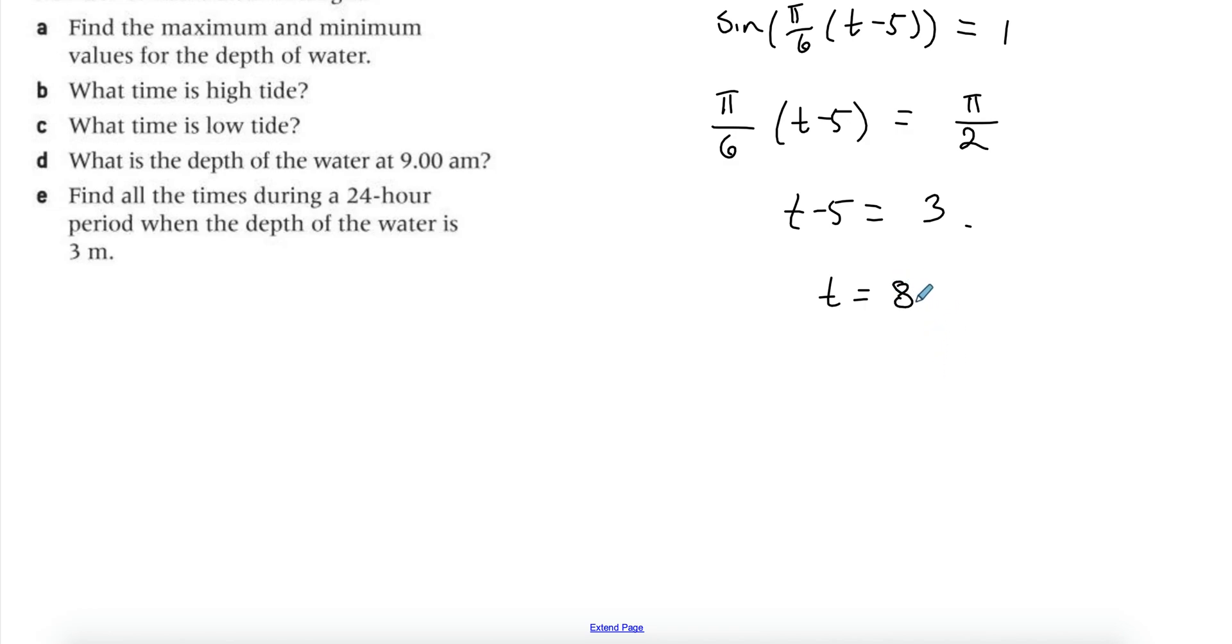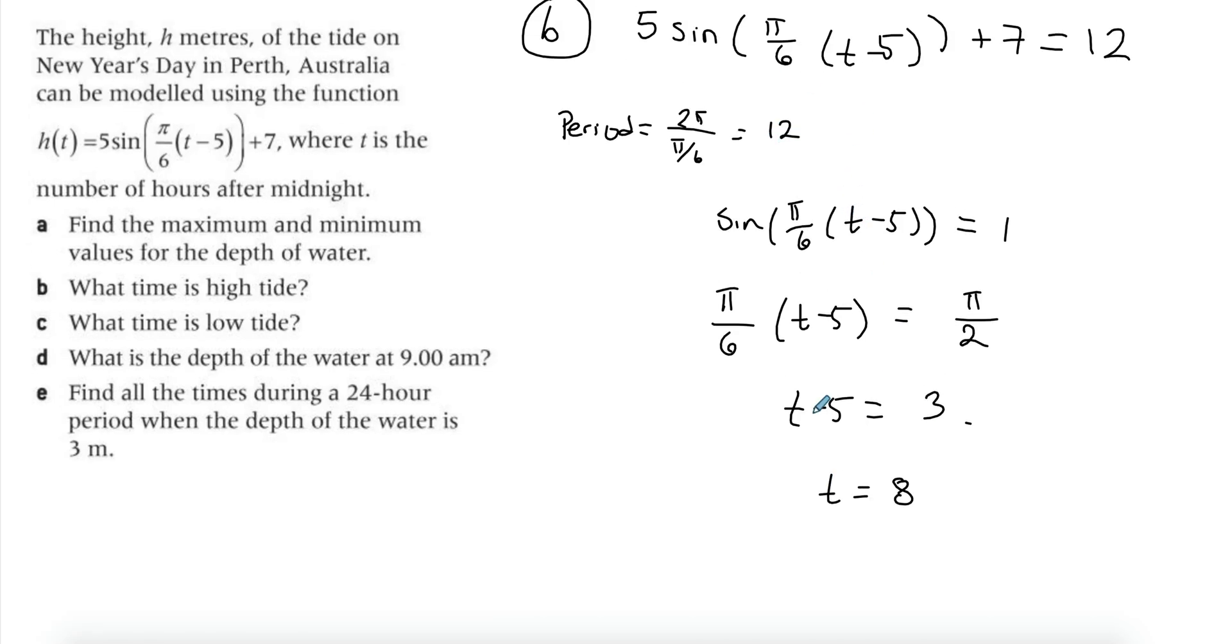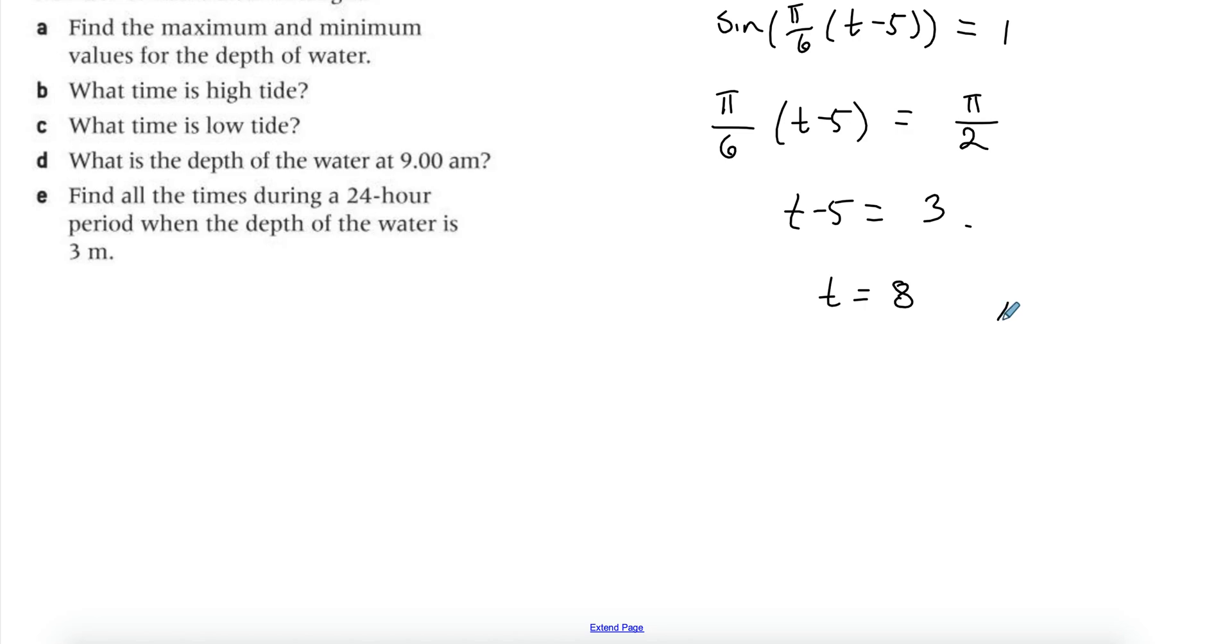And then I'm going to divide by pi over 6. So I'm going to get t minus 5 equals to 3. And then add 5 on both sides. So I'm going to get t equals to 8. So 8 is what we have. But remember, now that you've found the solution, you're going to have to add the periods in there. So I could add the period of 12. And that's going to give me 20. So it happens again at 20. So 8 a.m. Remember, t is the time. 8 a.m. and 20. So 20 would be 8 p.m. as well. But I'd assume they want the first time it happens. So this is your answer at 8 a.m.